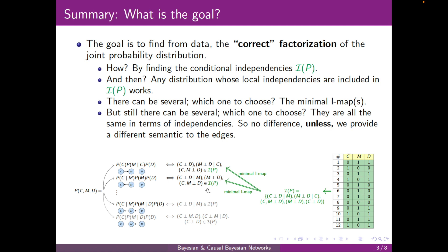But then still we saw that several of them, like here, both of them, they can all work. The difference is just the direction of the arrows. So which one should I choose? And the answer is that they are all basically the same in terms of independencies. So no difference, unless we provide a different semantics to the edges.